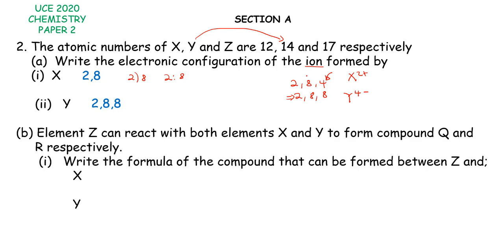We have part B. Element Z can react with both elements X and Y to form compound Q and R respectively. That means when element Z reacts with X, we form Q. And if Z reacts with Y, we form R. Write the formula of the compound that can be formed between X and Z.